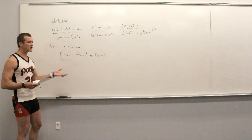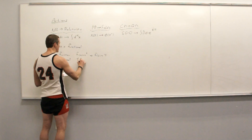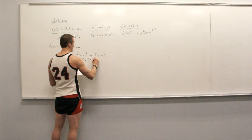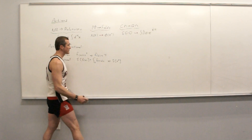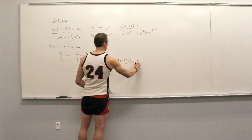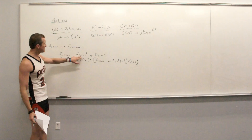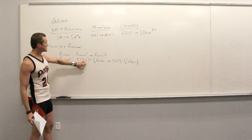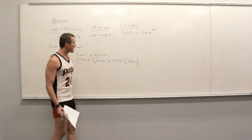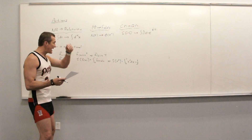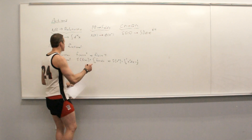A functional: you hand it a function and it returns a number. A simple example is to integrate from zero to one whatever function you put in. If we put in x squared and integrate from zero to one, we get one-third. So functions take an argument and give a number; functionals take functions and give a number.